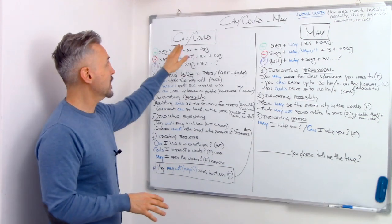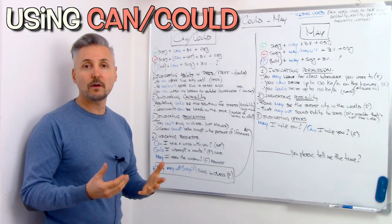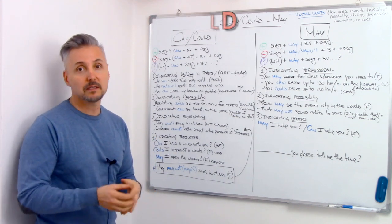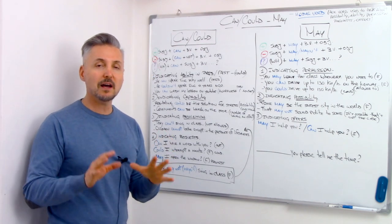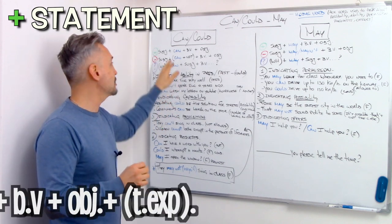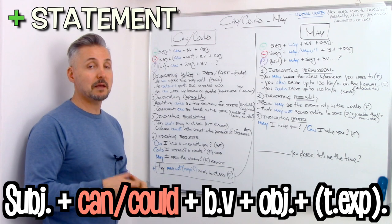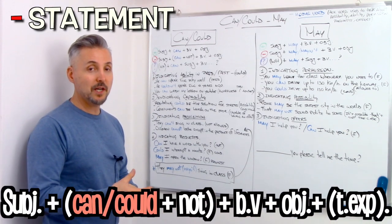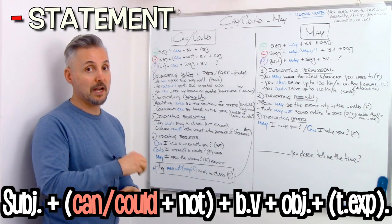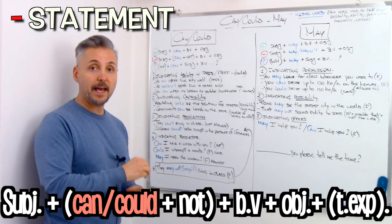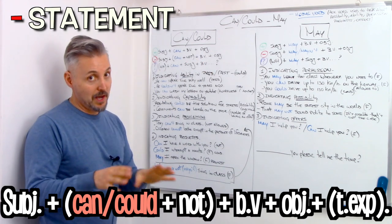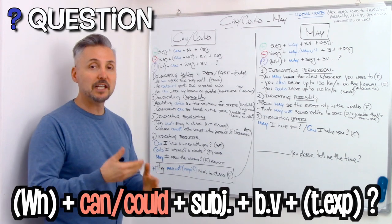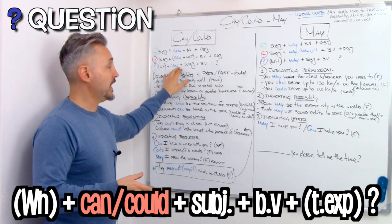We're going to talk about can, could, and may. Can is used for a present situation and could for a conditional sentence or a past situation. Let's look at the three types of formulas. For a positive statement, we use the subject plus can or could plus the base of the verb — without 'to' — and then the object. For a negative statement, we use the subject plus cannot or can't, or could plus not, plus the base of the verb without 'to', plus the object. For a question, we need a wh- question word if any, then can or could, then the subject, then the base of the verb.